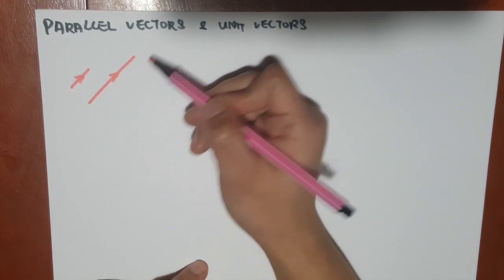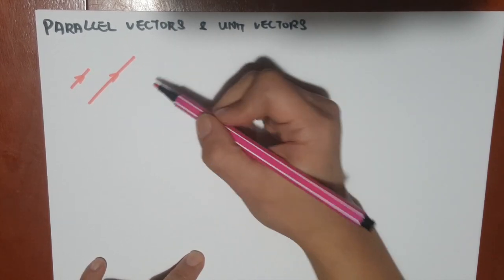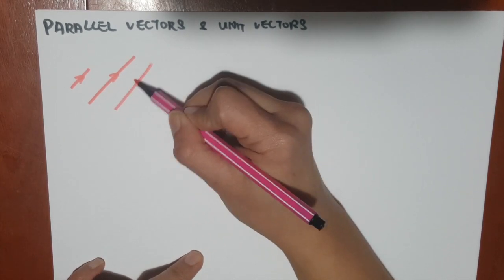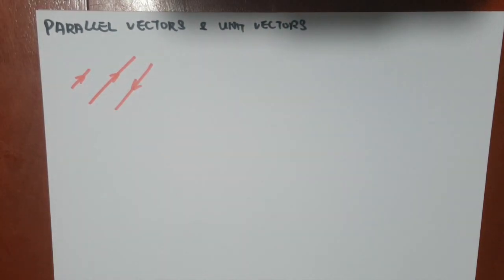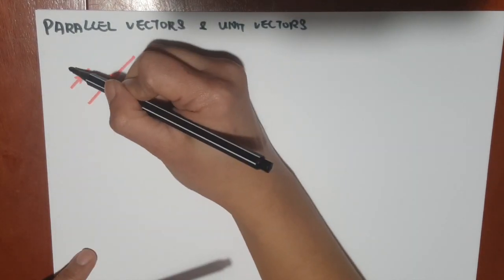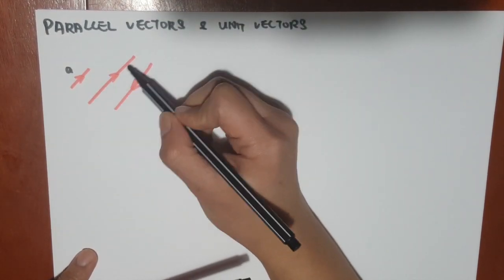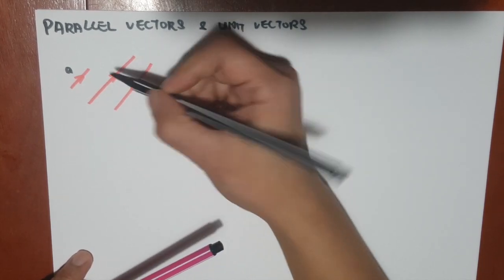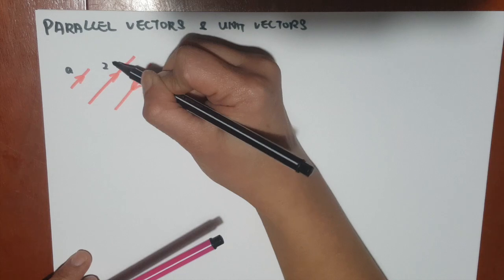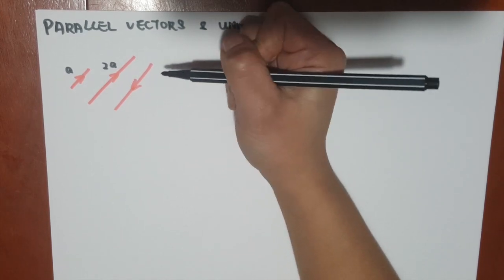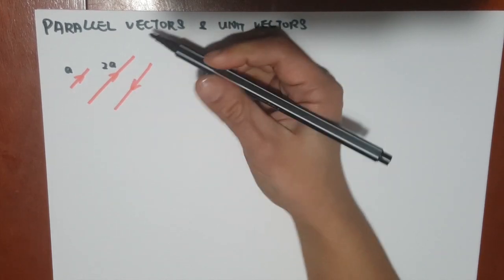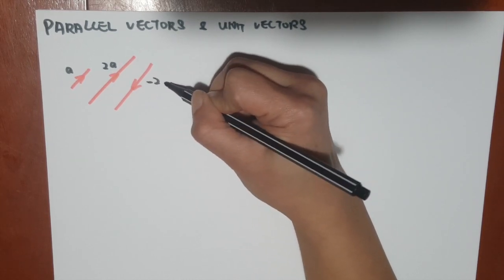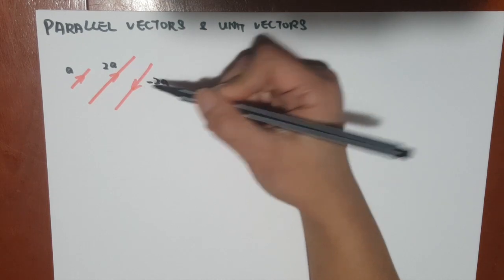Or they could be heading the opposite direction that could be counted as parallel as well. So let me give you three examples. So let's say this is a vector a and the second vector is sort of like two times the length of a. So this would be 2a and the third vector is actually in opposite direction. So this is like negative 2a because it's of the same length.